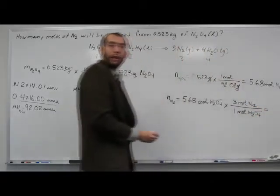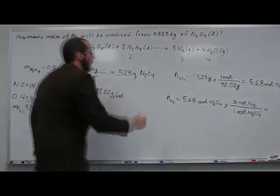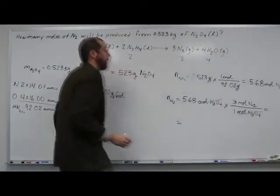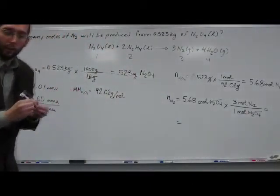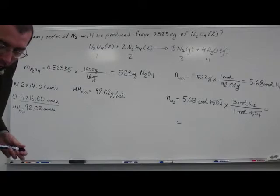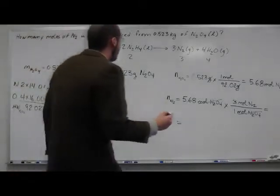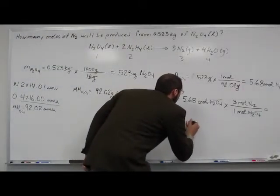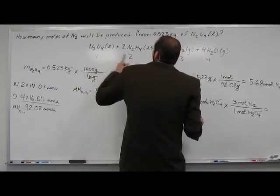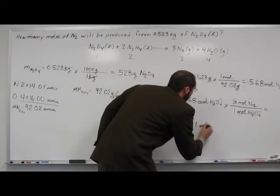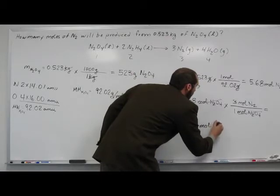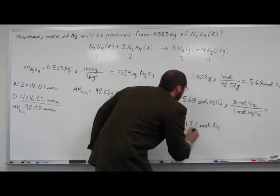And that gives us the number of moles of N2O4. So all we've got to do is multiply that by 3. And we come out with 17.1 moles N2.